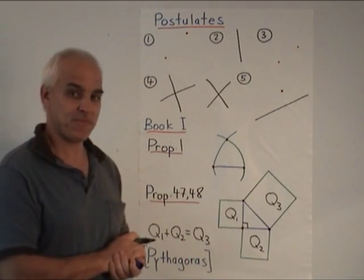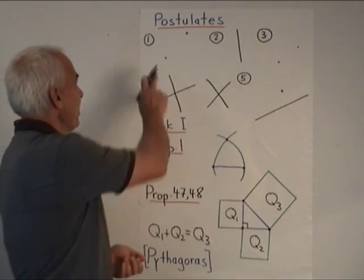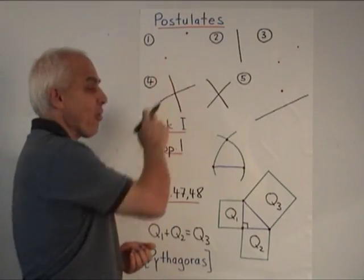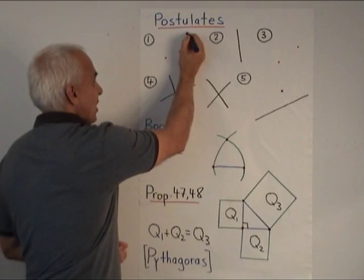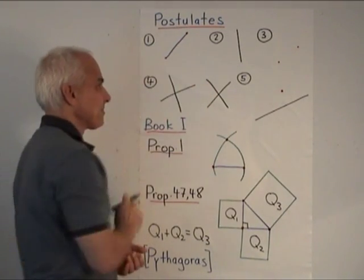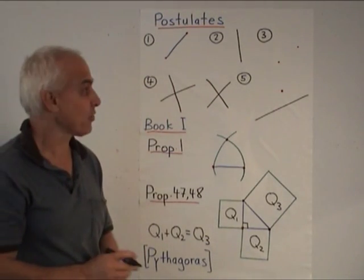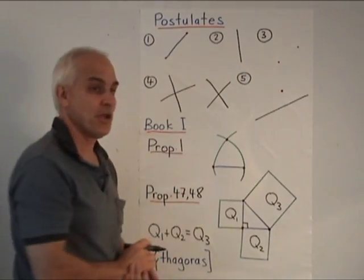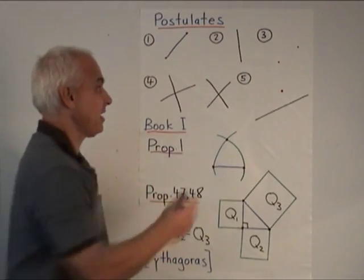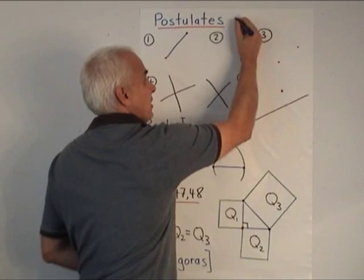There are five of them. Here are what they are. The first one is that if you have any two points, you can always draw a line between them. The second one is that if you have a line, you're always allowed to extend it in either direction as far as you want.